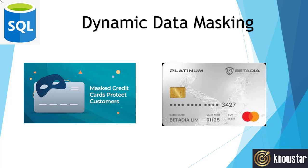There are other techniques which should be implemented along with dynamic data masking, like auditing, row level security, and encryption. We are not going to go into details on those in this video, but they need to be implemented for a stronger security level of the database. Dynamic data masking is basically to prevent some other users who are not authorized to view the sensitive information, so it will be masked in some forms.